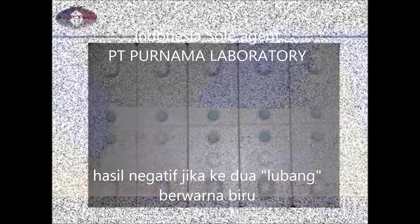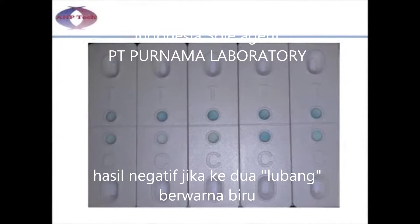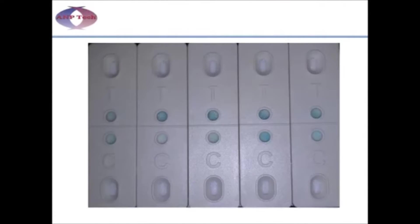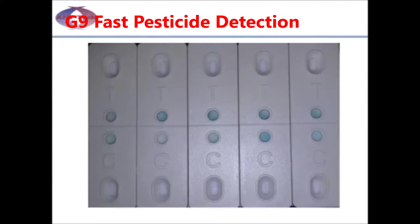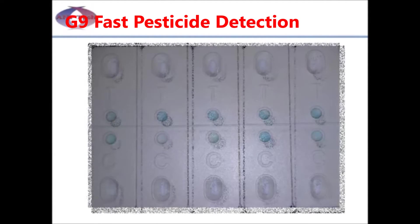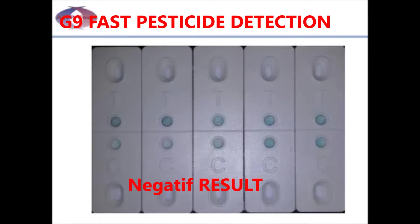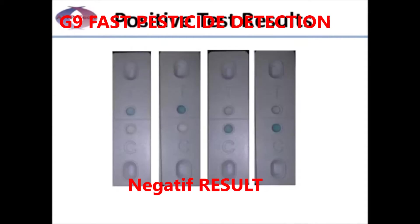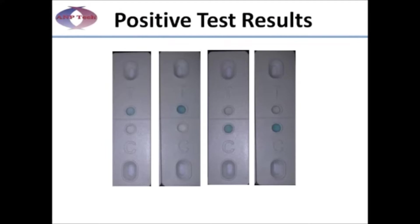As there is natural variation in the reaction used in the test, here are some examples of negative results. Both circles have some blue color to them. A positive result is when no color develops in one or both wells.